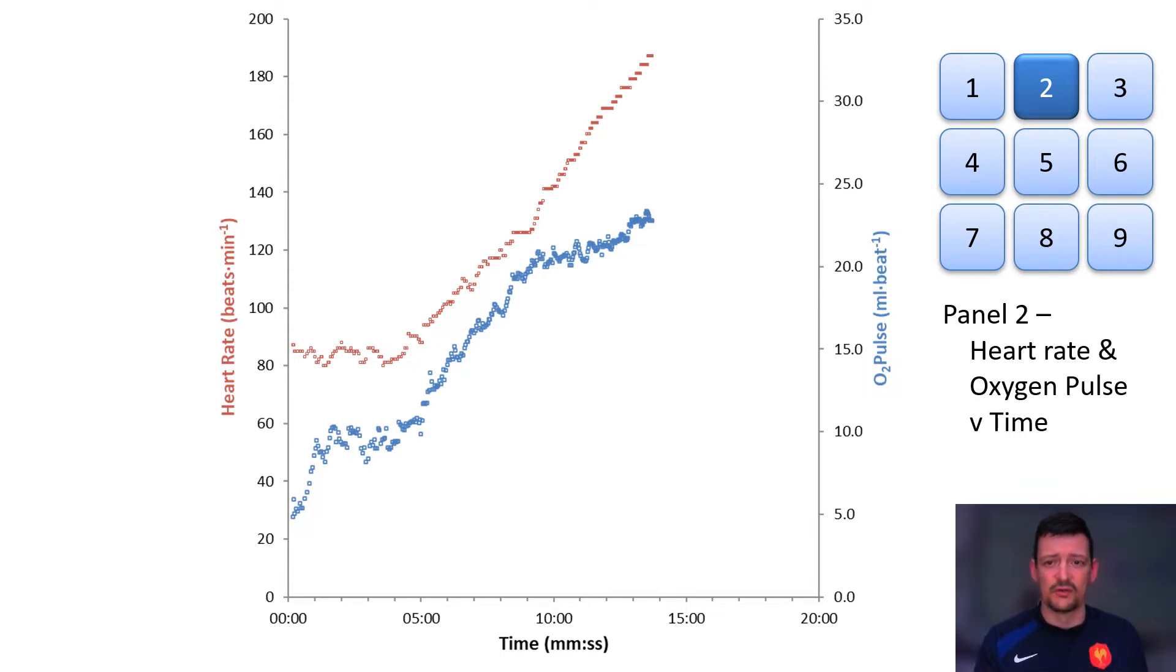As you can see from the units on the graph, oxygen pulse is just the amount of oxygen delivered per beat of heart rate. If we look at the Fick equation for calculating VO2, we can rearrange it to show that VO2 per heart rate, the oxygen pulse, is just equal to the product of stroke volume and the AVO2 difference.